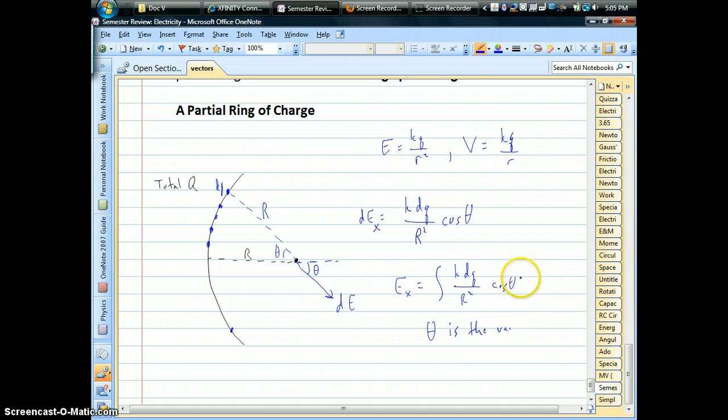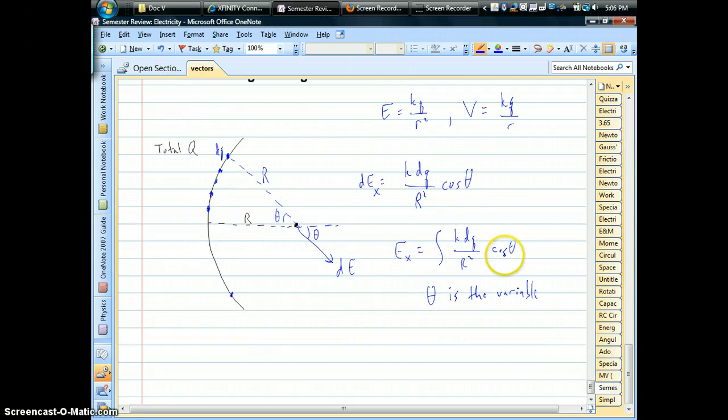So we can't quite figure out this integral yet because we don't know, we don't have a D theta in the integrand. So how on earth are we going to get a D theta in there? You know, we basically have to write the charge in terms of theta.